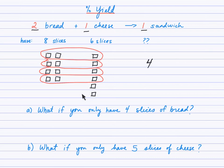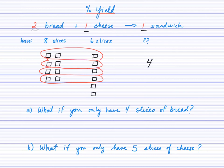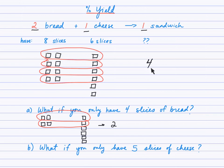So let's imagine you're planning to make these sandwiches and as you are starting to make them, your little sibling or cousin runs in and steals some bread from your pile. Now you only have four slices of bread. So how many sandwiches will you be able to actually make? Hopefully you determined that with just four slices of bread you were actually only able to make two sandwiches.